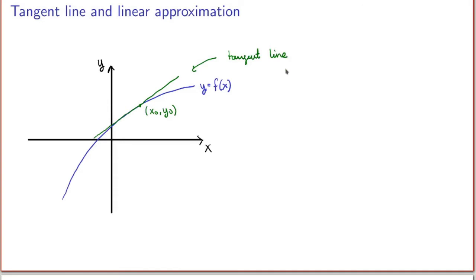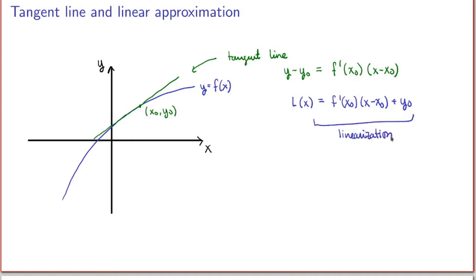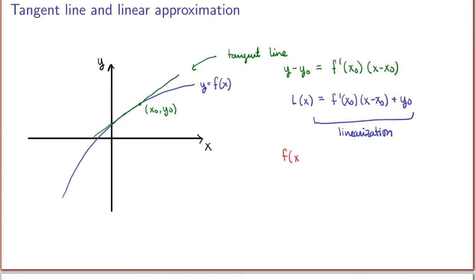We know that the slope of the tangent line is given by the derivative of the function at this point. More precisely, the equation of the tangent line is y minus y₀, which equals the derivative of f at x₀ times x minus x₀. This tangent line provides a very good approximation of the function. So we call L of x — which is f prime of x₀ times (x minus x₀) plus y₀ — the linearization of the function at this point, because it's replacing the function by a linear equation. We call this the linear approximation of the function.